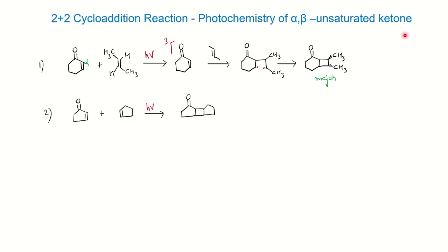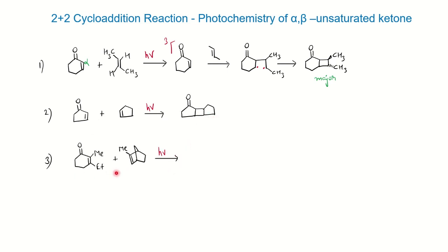Similarly, in the next example you have an alpha-beta unsaturated ketone and an alkene — you show the 2+2 cycloaddition and get the product. In a third example you have a substituted alpha-beta unsaturated compound and a substituted olefin, and we need to draw the product with stereochemistry via 2+2 cycloaddition reaction.